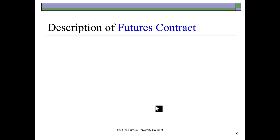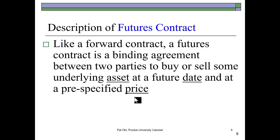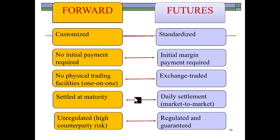A futures contract is very much like a forward contract — it is also a binding agreement between two parties to buy or sell the underlying asset at a future date and at a pre-specified price. A futures contract is actually a special case of a forward contract. The key difference is that a forward contract is customized between the two parties, who can choose whatever terms they wish for exchanging the underlying assets. A futures contract, by contrast, is standardized.